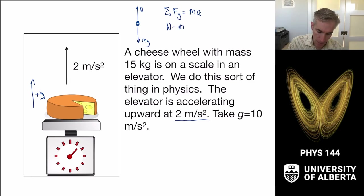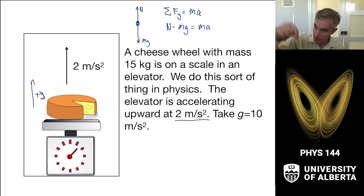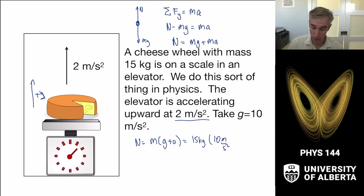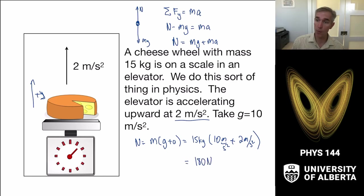The normal force minus mg is equal to mass times acceleration — it's accelerating upward. I've defined y to be positive in the upward direction, hence the magnitudes work out. So the normal force equals mass times g plus the acceleration: that's 15 kilograms times 10 meters per second squared plus 2 meters per second squared. So that's 12 times 15, or 180 newtons. If the elevator is accelerating upward, the scale reads a higher value of 180 newtons.